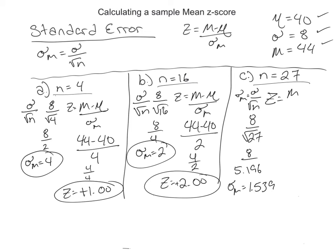Let's put this in our z formula. Mean minus mu divided by our estimated standard error. So again, 44 minus 40. In this case, divided by 1.539. So now we get a z of, this could be a high one, yeah, positive 2.59. It's really big.